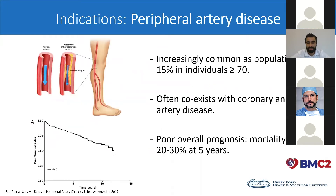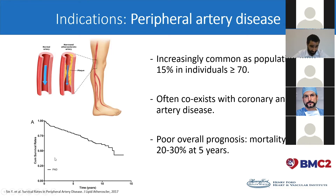As for the indications, the first one is peripheral artery disease. It's increasingly common as the population ages, with an estimation of 15% of individuals being affected at age more than 70 years old. It often co-exists with coronary and carotid artery disease and has a poor overall prognosis, with a mortality rate of around 20% to 30% at 5 years. As you can see on the Kaplan-Meier survival curve, at around 10 years, 40% of PAD patients are dead.